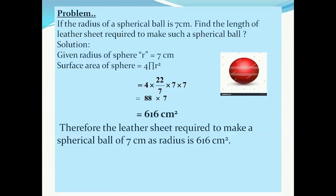If the radius of a sphere is seven centimeters, find the length of the leather sheet required to make such a spherical ball. Given: radius r = 7 cm. Surface area of a sphere = four pi r squared. Substituting the values: four × (22/7) × 7 × 7. The sevens in the numerator and denominator cancel, giving us 616 cm². Therefore, the leather sheet required to make a spherical ball of radius seven centimeters is 616 cm².